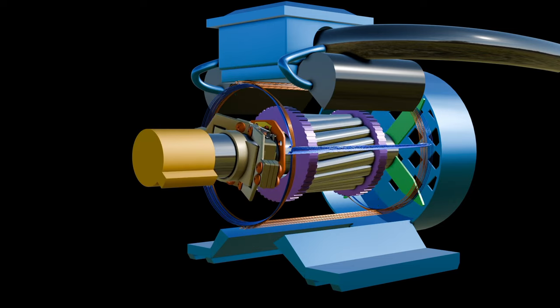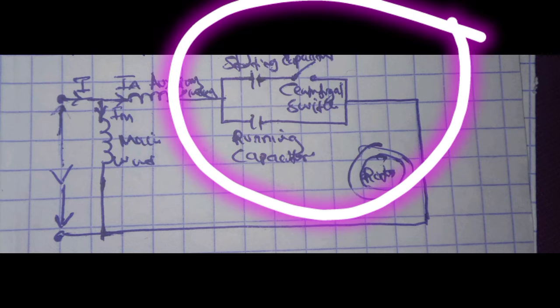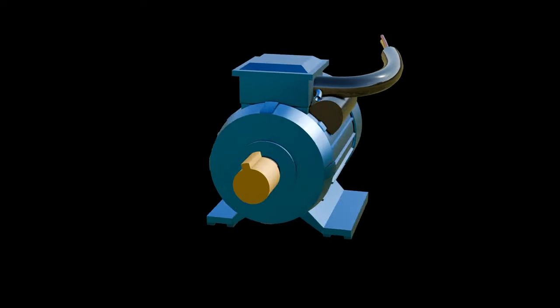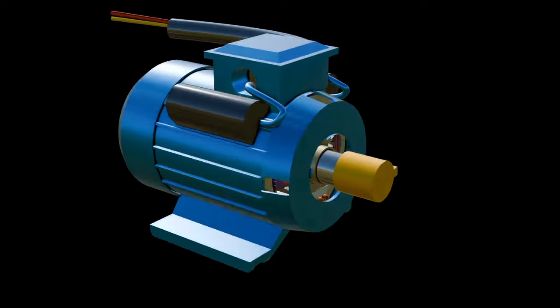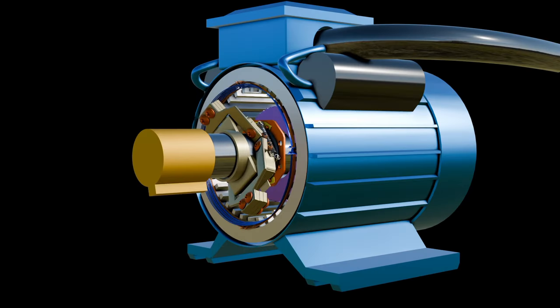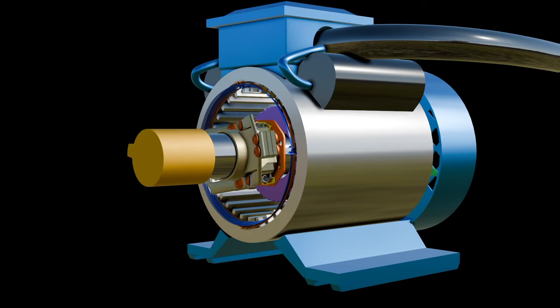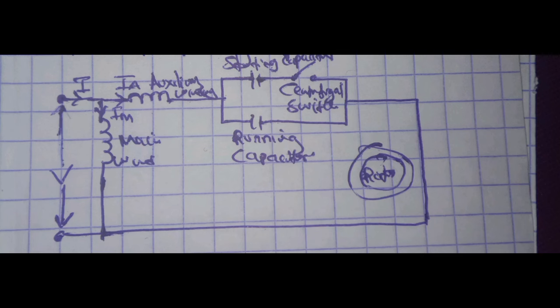Capacitor start, capacitor run induction motor: In this type of motor, two capacitors are connected in parallel with series in auxiliary winding. Out of these two capacitors, one capacitor is used only for starting and another capacitor is connected permanently with the motor for running. The starting capacitor has high capacitance value and running capacitor has low capacitance value. The starting capacitor is connected in series with a centrifugal switch that will open when the speed of the motor is 70% of synchronous speed.